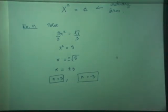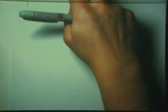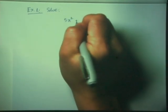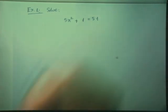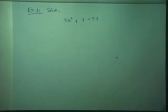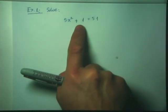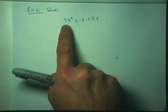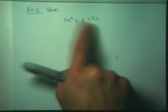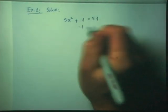Let's try again with the square root property. In example number 2, we would like to solve 5X² plus 1 equals 51. My equation is not in ordinary form — I do not have one perfect square equal to a number. I have 5X² plus 1 equals 51. So I need to subtract 1 from both sides.